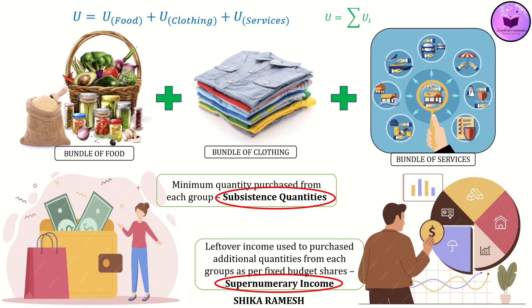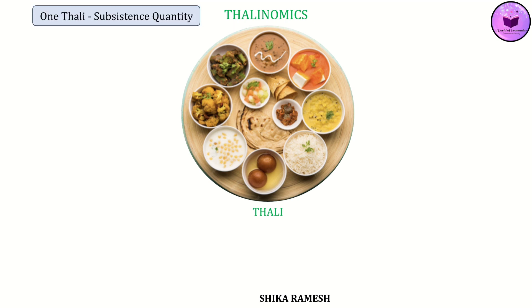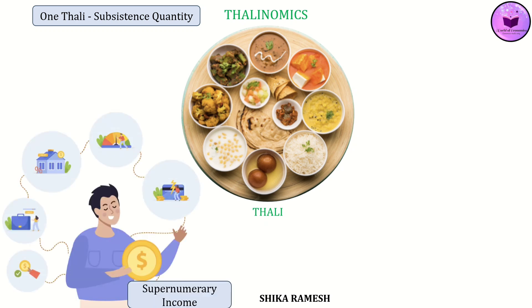So total income can be split into two parts: subsistence expenditure, which covers the minimum needs, and supernumerary expenditure, which is the additional spending on categories with the income left after minimum consumption. Now, let's connect this to something familiar for us Indians — Thalinomics. In India's economic survey of 2019-20, Thalinomics was introduced as a measure of how affordable a plate of food, that is, a thali, is for the average Indian. In LES terms, we can think of at least one thali per day as a subsistence food requirement — the minimum quantity that cannot be avoided. If a worker earns a certain daily wage, the cost of this one thali must first be covered; only after that can the remaining supernumerary income be spent on more food variety.